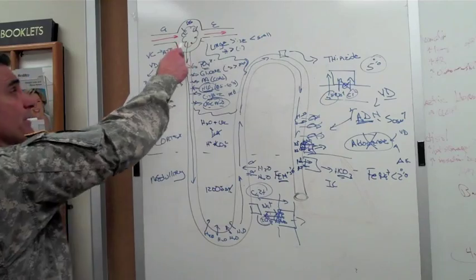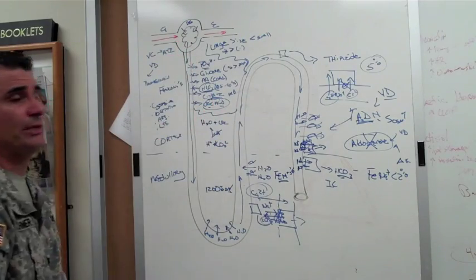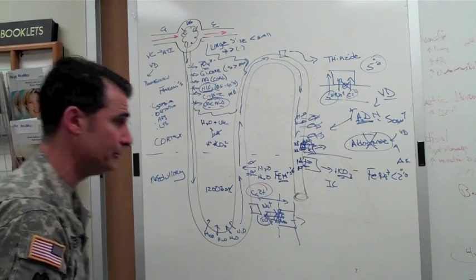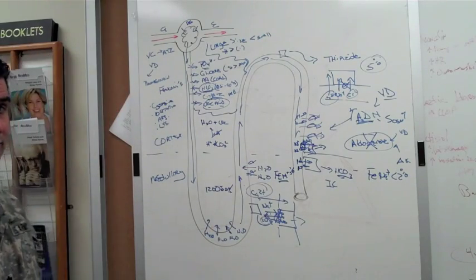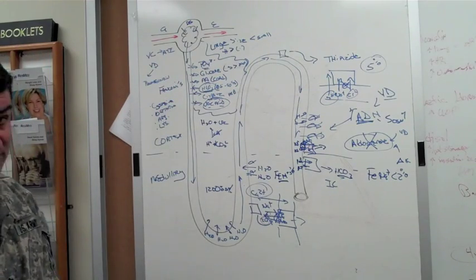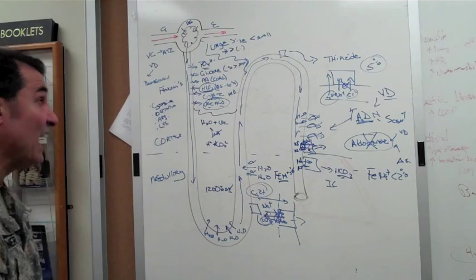Mannitol is freely filtered here at the glomerulus and then is not reabsorbed any place else. So like I told you before, if 700 milliosmoles presents to the distal tubule, you will pee out one liter of fluid. So in other words, it is an osmotic diuretic that drives the force of your urine output in that case.